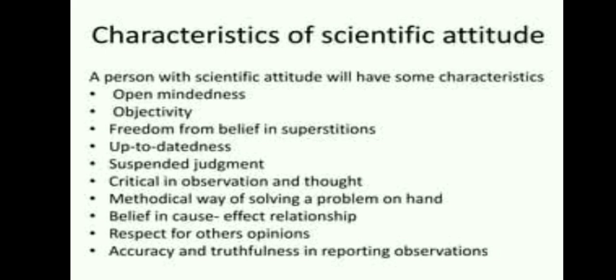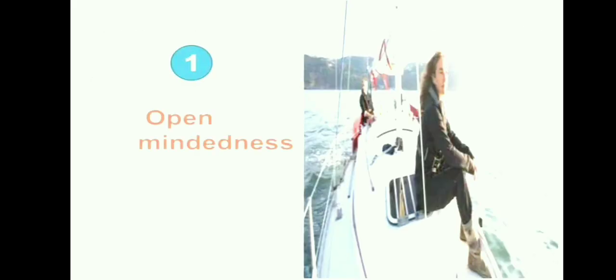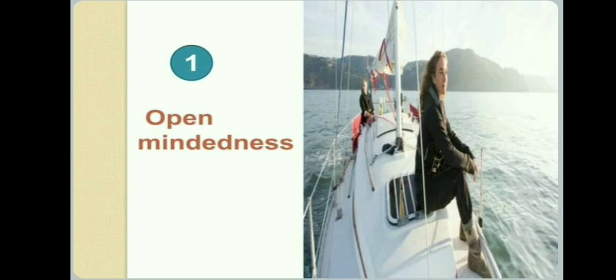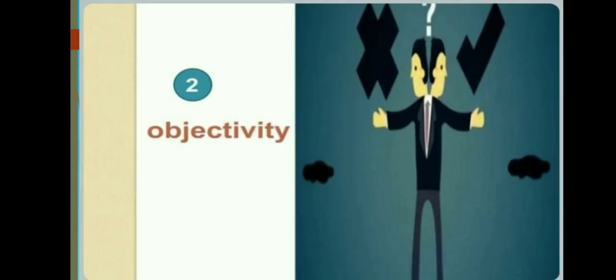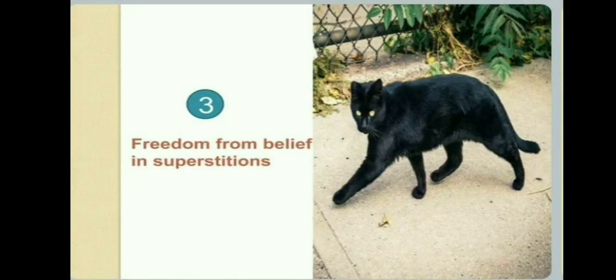Characteristics of a Scientific Attitude. A person with a scientific attitude will have certain characteristics. The first one is open-mindedness — the person who has a scientific attitude is always open-minded. The second is objectivity, and the third is freedom from beliefs in superstitions — he does not believe in superstitions.